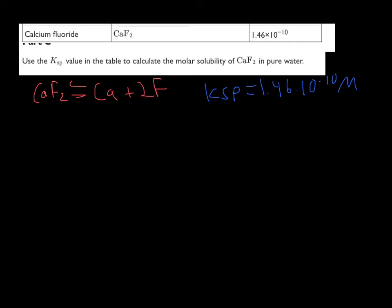So, why don't we just write down the constant expression while we're here so we don't get confused. It would be Ca multiplied by F. Now, remember, 2F. So, that means we square it. That's very important to remember.